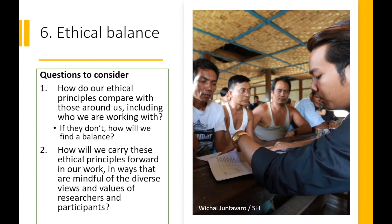The sixth and final principle is ethical balance. We remain committed to these principles, but we also want to acknowledge and respect potentially different perspectives within the contexts or communities where we're conducting research. We should ask: how do our own ethical principles compare with those around us, and if they differ, how do we strike a balance to ensure that both parties are respected? And how will we carry these Summonet ethics principles forward in our work — in research activities and policy engagement — in ways that are mindful of the different views and values we will come across across the region?